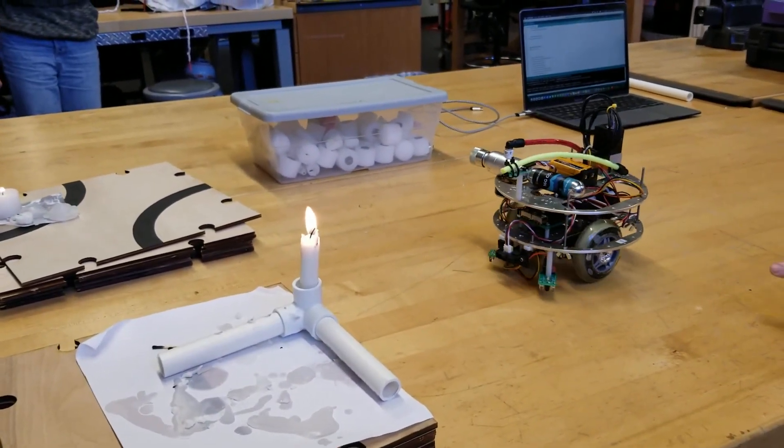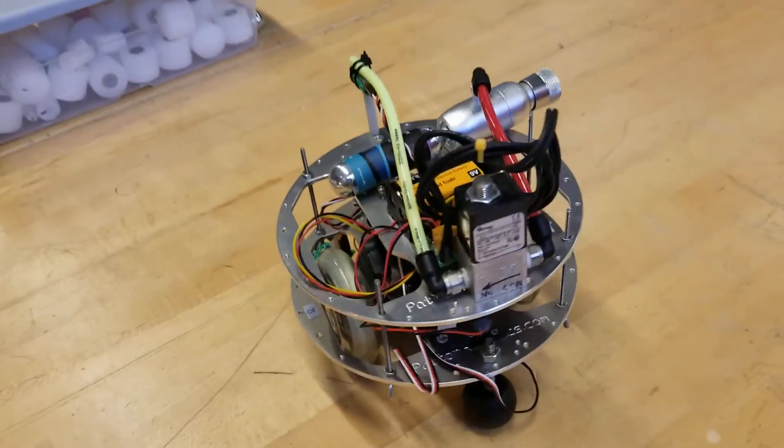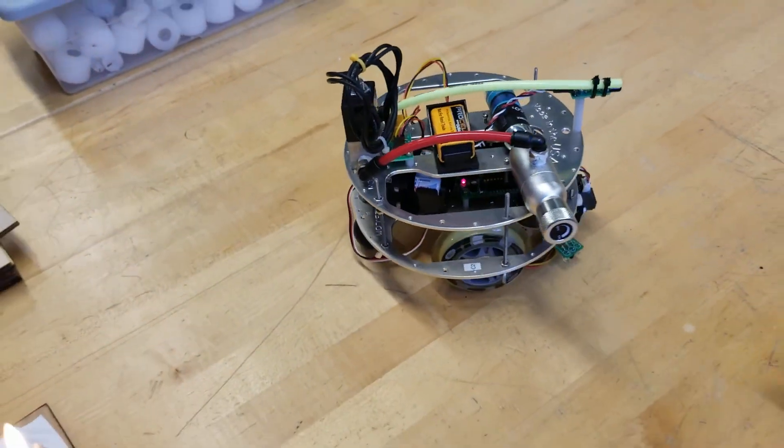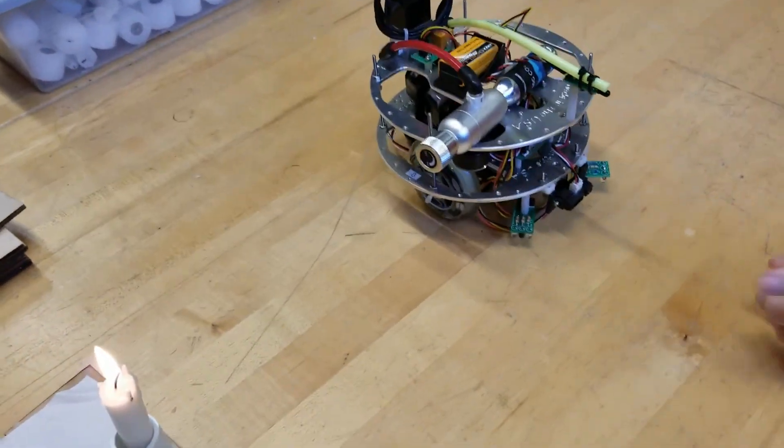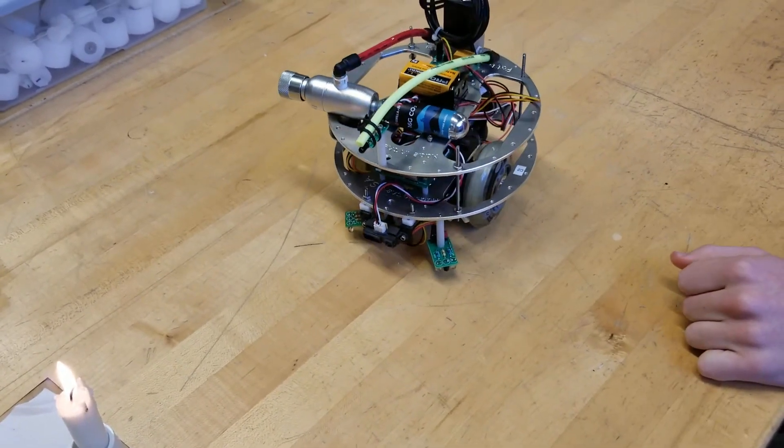So when you turn it on, the first thing it does is spin 360 degrees and mark out which degree has the most light attached to it, and then it will move to that degree like it is doing now.